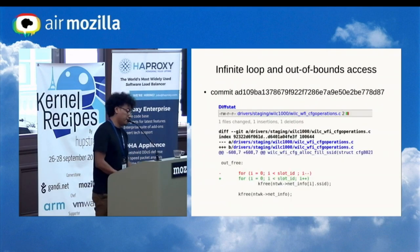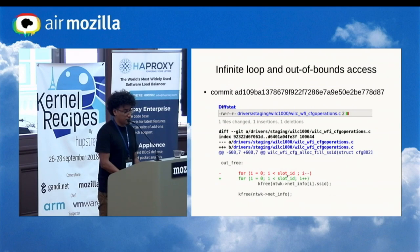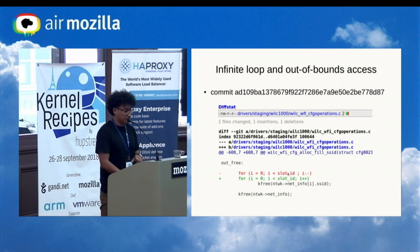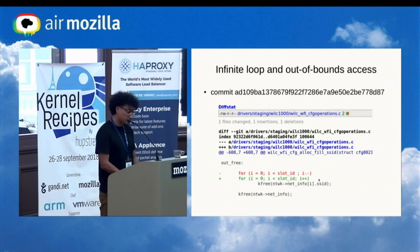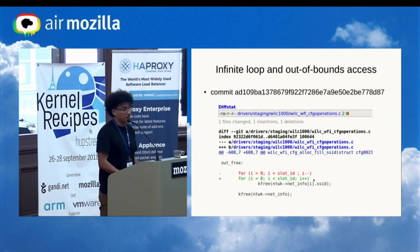Here we have an infinite loop and an out-of-bounds access at the same time. Variables i and slot_id were originally of type signed int, and i was being used as an index for the net_info buffer. The issue was obvious: we only had to increment the variable i instead of decrementing it.